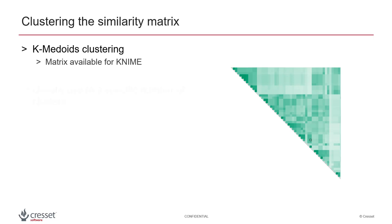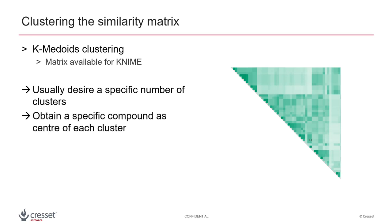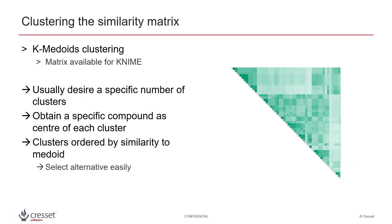This method allows you to select the specific number of clusters you wish to partition your data into, and the centre or medoid of each cluster is a specific compound that represents the cluster. Cluster members are ordered by similarity to the medoid molecule, making it easy to select alternatives.